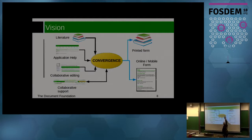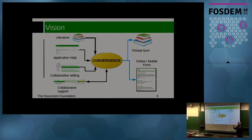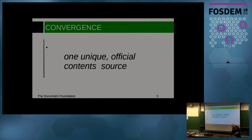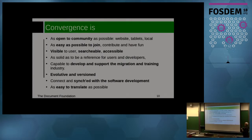With that convergence of contents, we want to have output not only online but also in print, and also multimedia formats. In a sense, it's one unique and official content source. It's important that we be the source for many other kinds of industries — like the training industry and publishing industry — and provide a unique and official source of information on LibreOffice.